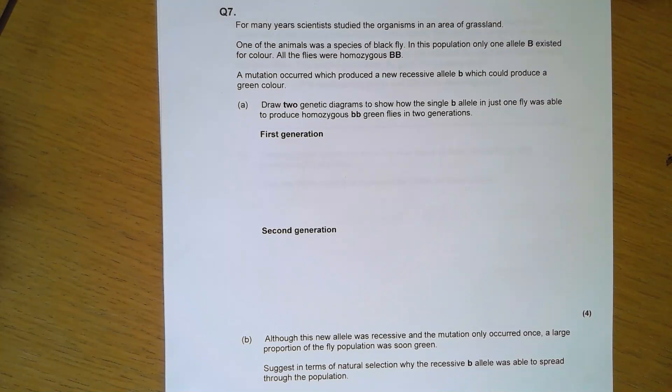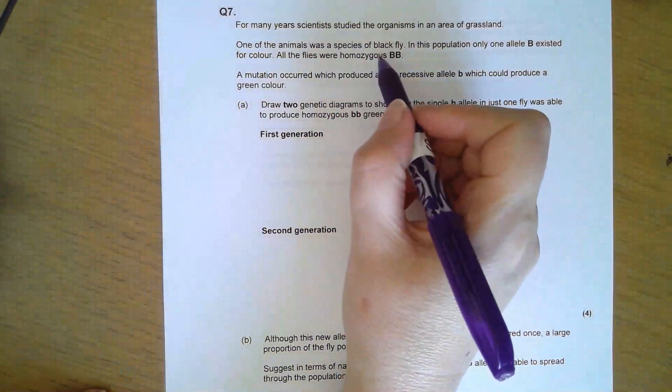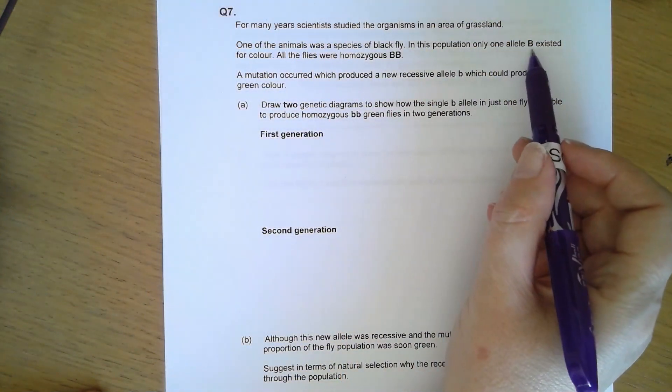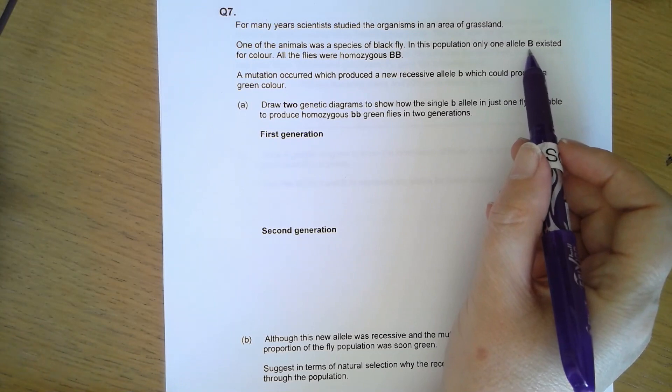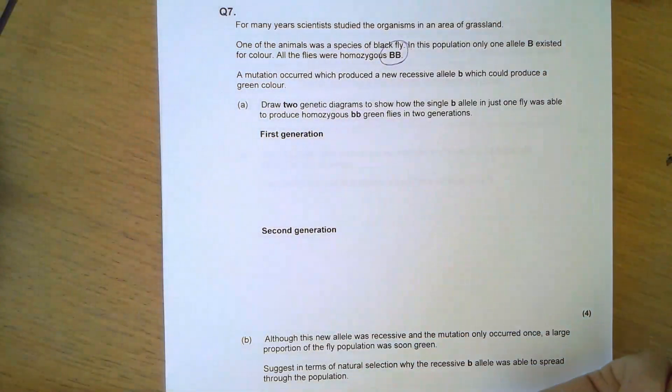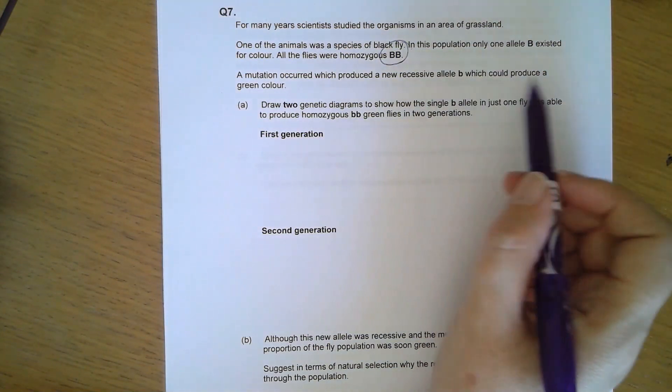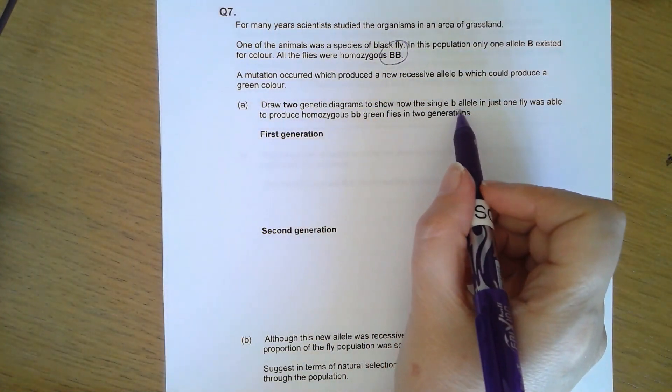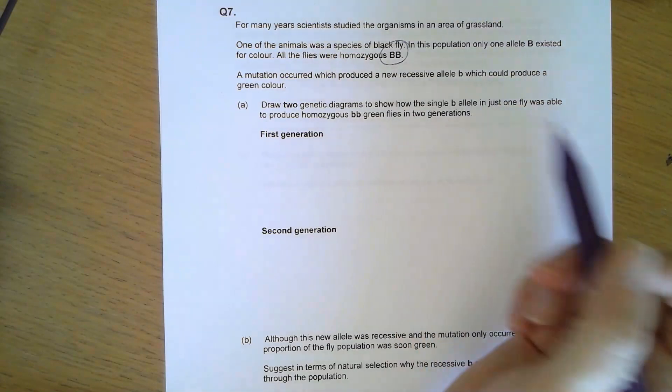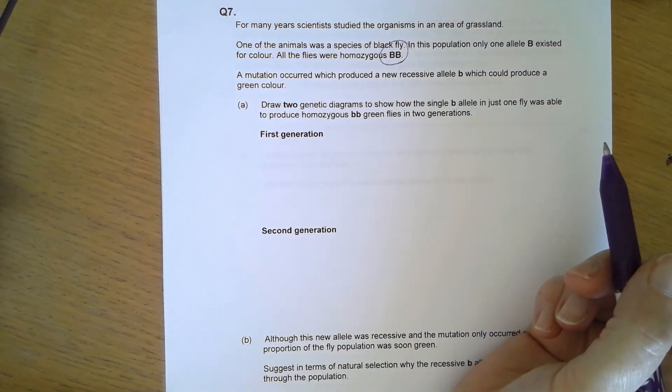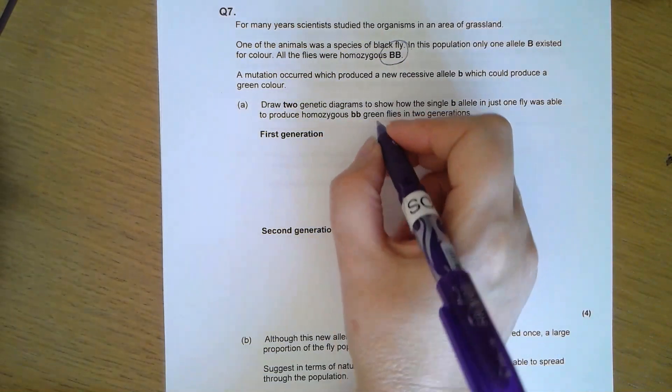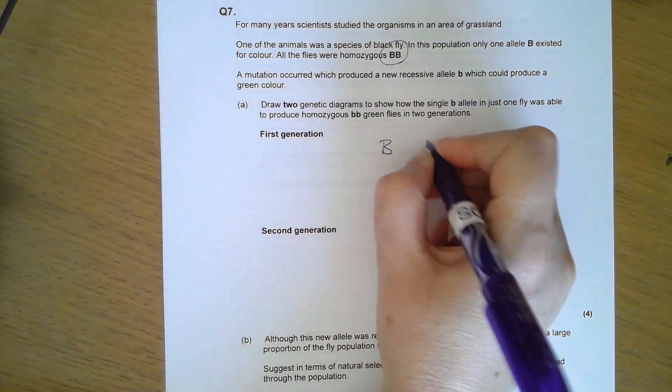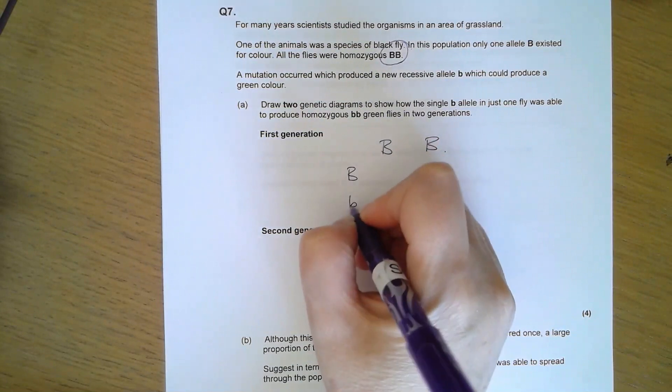For many years, scientists studied organisms in an area of grassland. One of the animals was a species of black fly. One allele existed for colour, so all the flies were homozygous capital B. A mutation occurred, so there was a new recessive allele that could produce a green colour. Draw two genetic algorithms to show how the single b allele in just one fly was able to produce homozygous green flies in two generations.